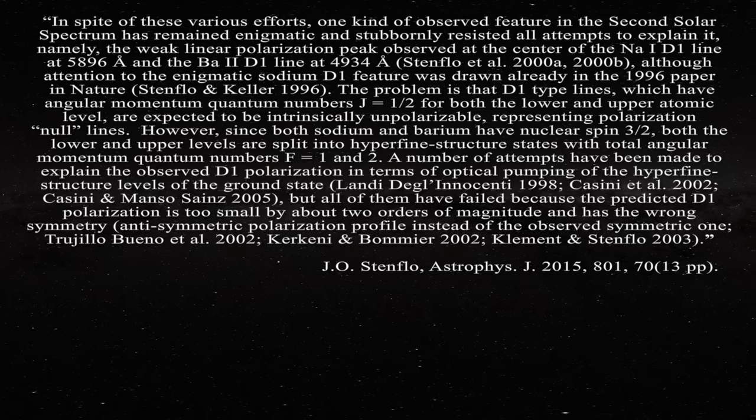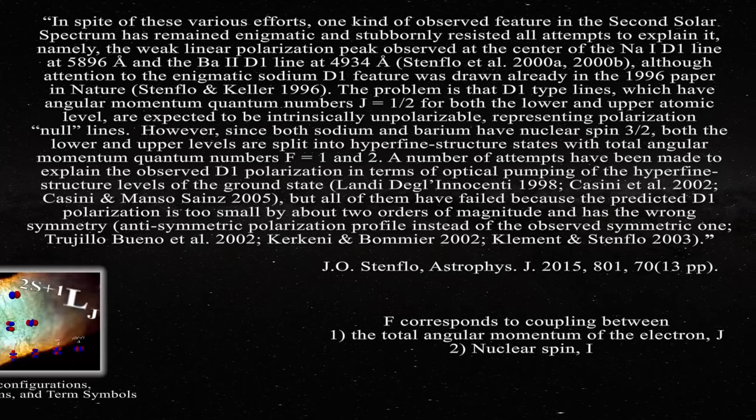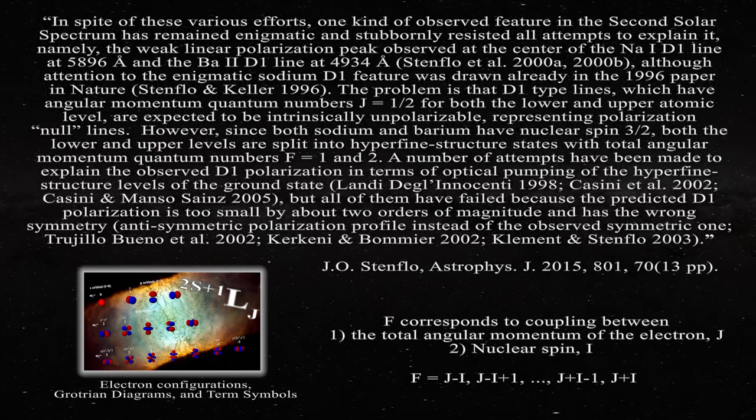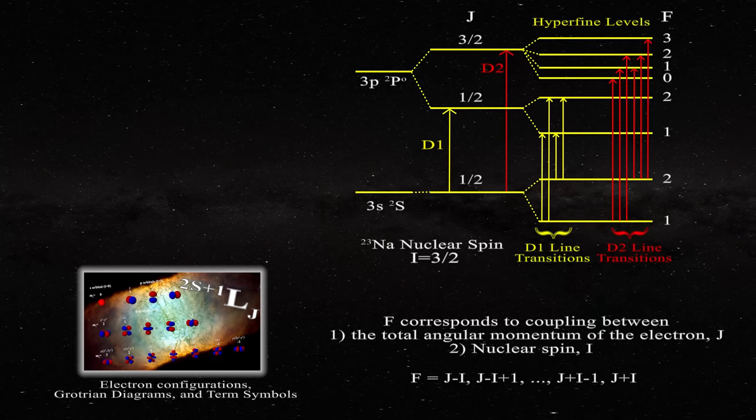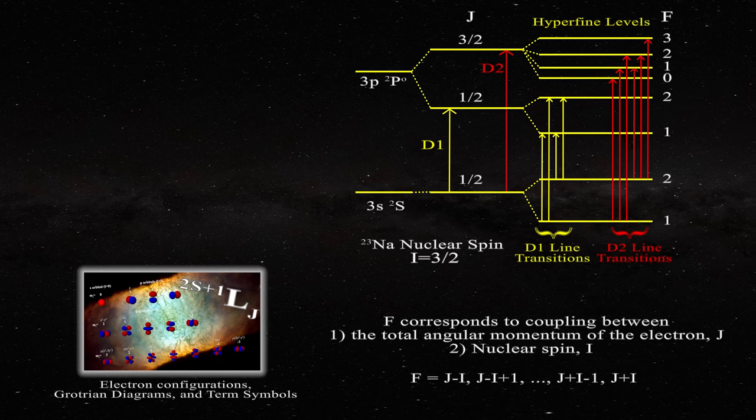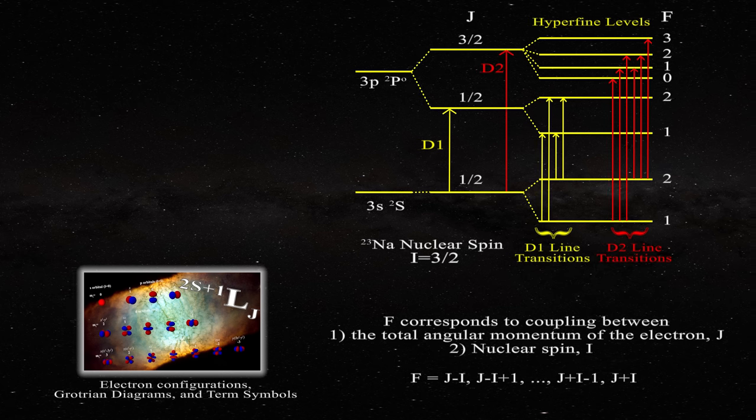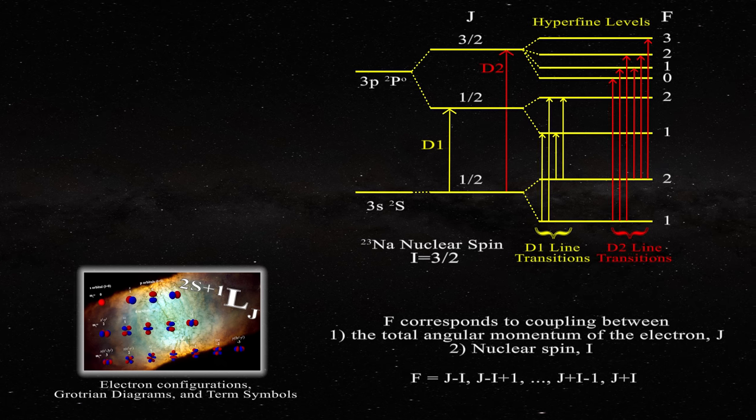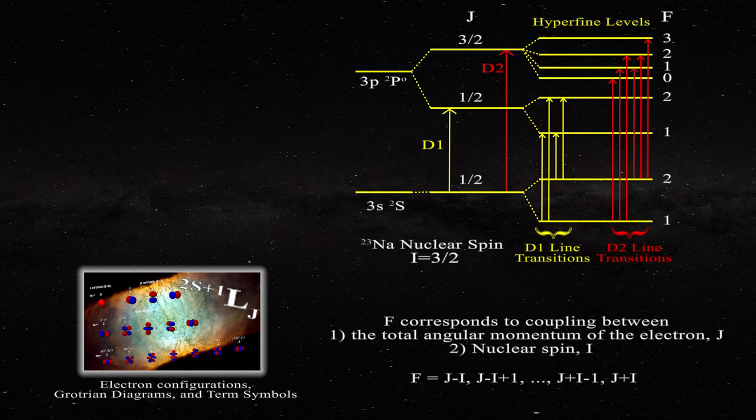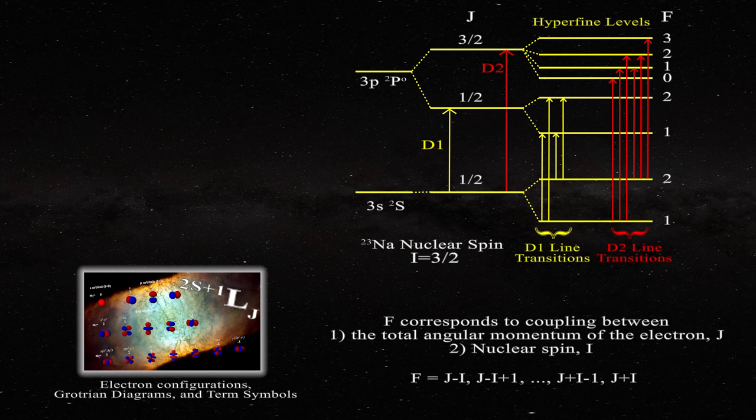In this quotation the quantum number F is due to the coupling between the total angular momentum quantum number for the electron J as discussed in this video and the nuclear spin I. F can adopt the following values. The result of all of this is that the nuclear spin can act to split electronic levels into hyperfine sublevels as one can see in this illustration for the sodium D1 and D2 lines. In this case the electron is making a transition between the 3s and 3p orbitals. In order to better understand this figure we begin on the left with the two energy levels involved in the transition as denoted by the term symbol doublet s and doublet p with parity.